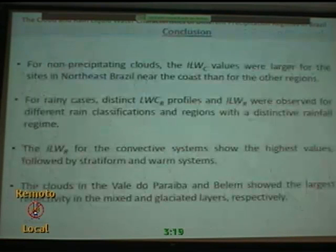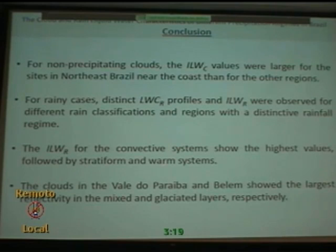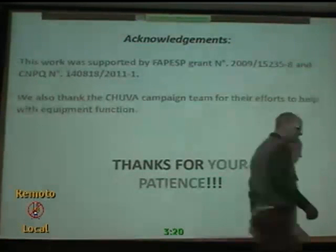That's all. In summary, my conclusions are: for non-precipitating clouds, the liquid water content was larger in the northeast part of Brazil, close to the coast, compared to other regions. For precipitating clouds, we have distinct characteristics of different profiles and liquid water content. The convective system shows the highest values for the stratiform and the warm system. And in Valle do Paraíba, the ice is very important for the inland regions. Thanks for your patience.